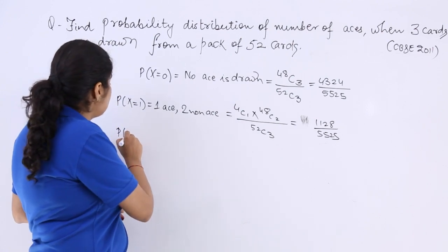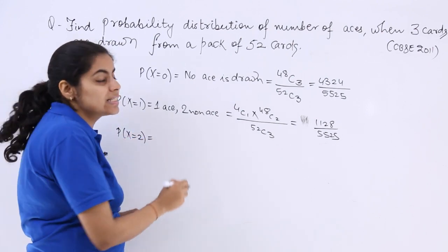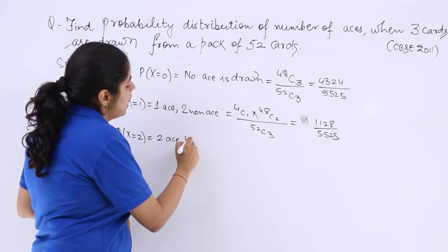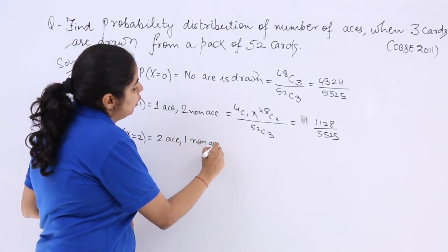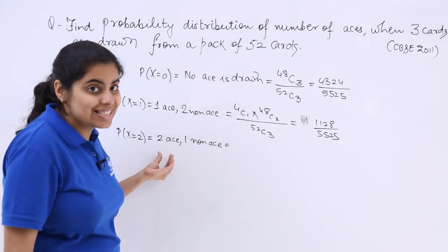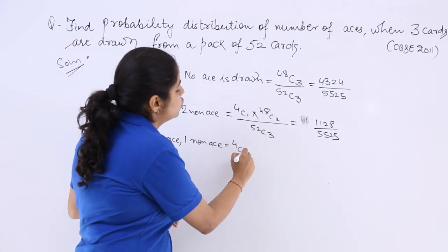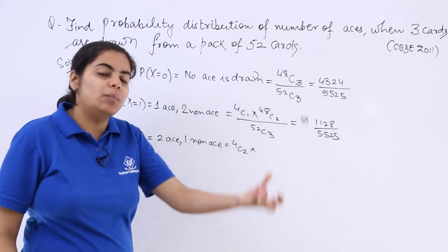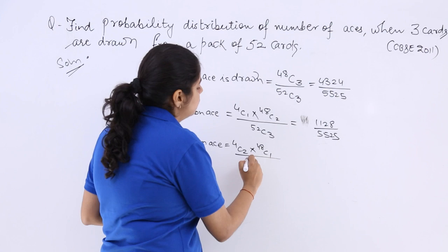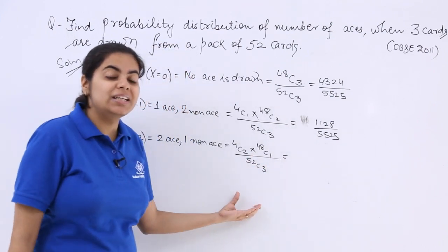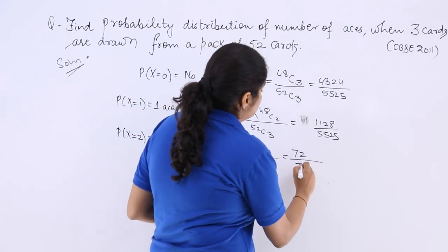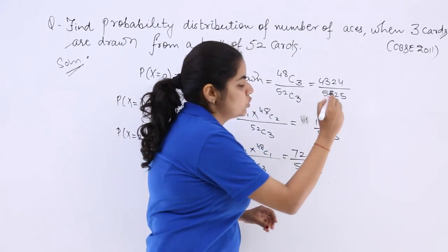Now next, probability X is equal to 2. That means 2 cards you are going to take out from the ace section and 1 you are going to take out from the non-ace section of cards. So 2 cards from the ace, that means 4c2, and 1 from non-ace category, so that is 48c1 over 52c3. This will yield 72 over 5525.